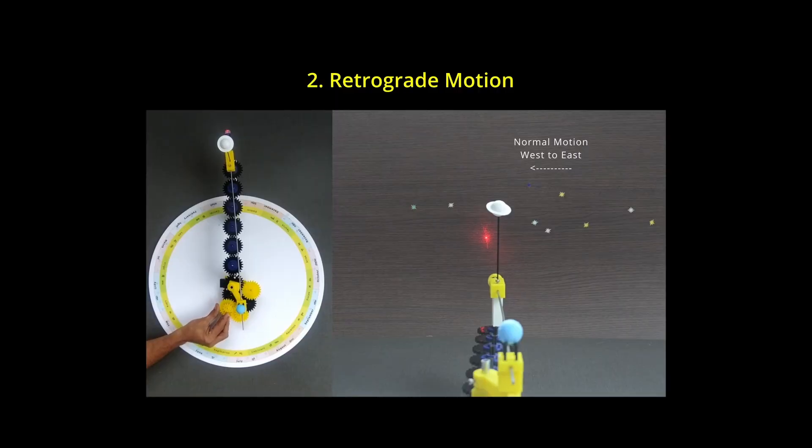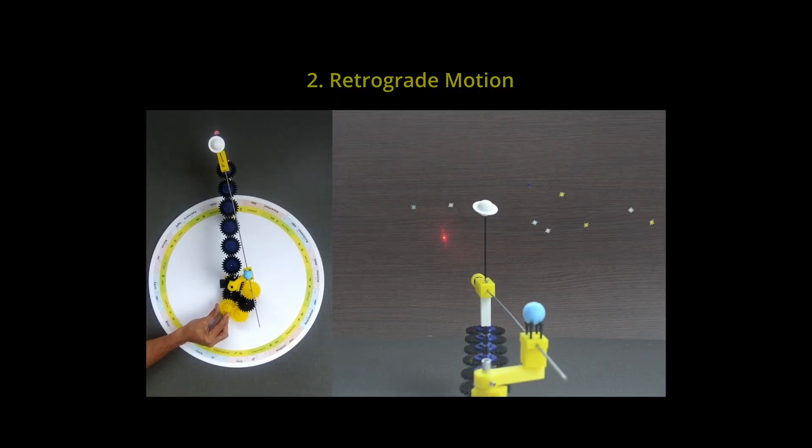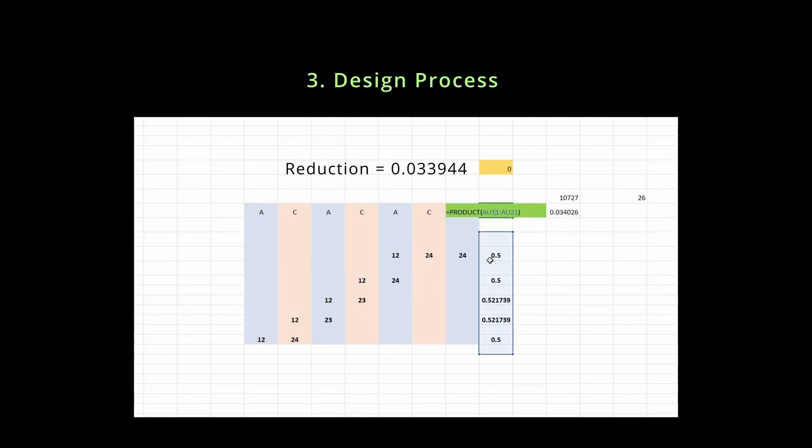We will also explore another regular feature, that is retrograde motion. Towards the end, the design and build process of the model will be discussed.